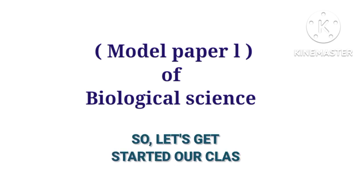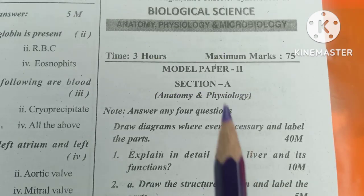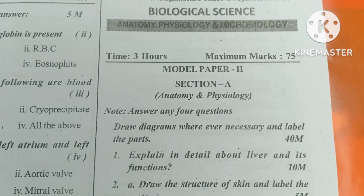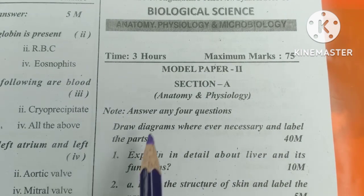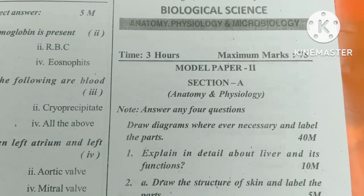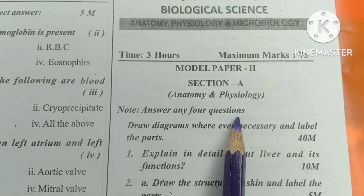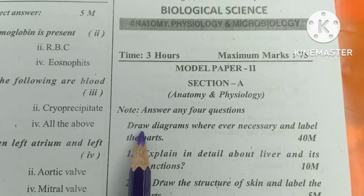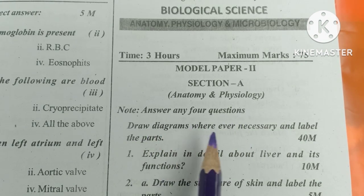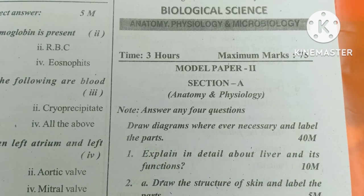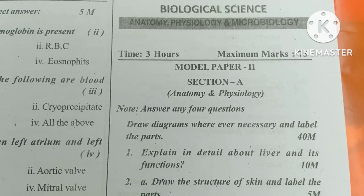So let's get started with our class. In Model Paper 2, we will look at the questions from Anatomy and Physiology. Answer any 4 questions. Diagrams are necessary where required — draw the diagram and label the parts.